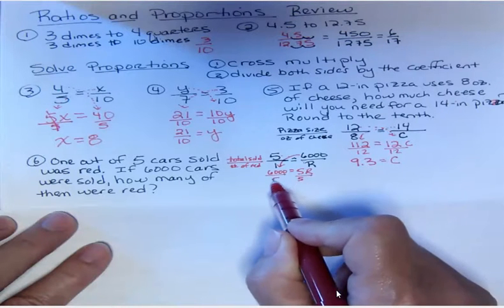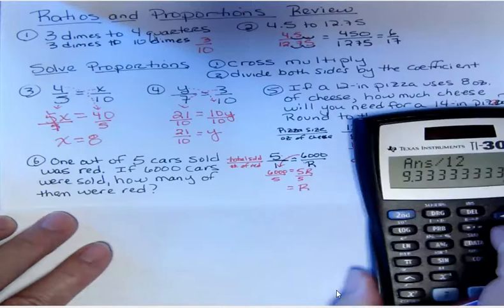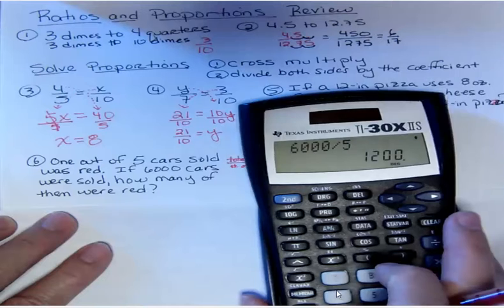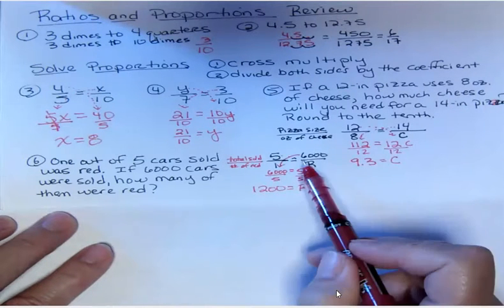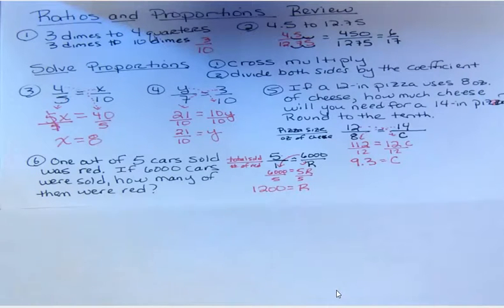And now I'm going to divide both sides by 5, and so I have 6,000 divided by 5, and that gives me 1,200. So that means there were 1,200 red cars sold. The two steps: cross multiply and then divide by your coefficient. Those are the only two steps there. Okay, quick review of proportions. Have a fantastic day.